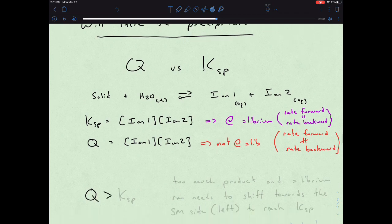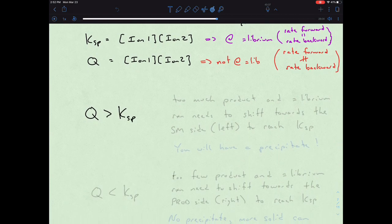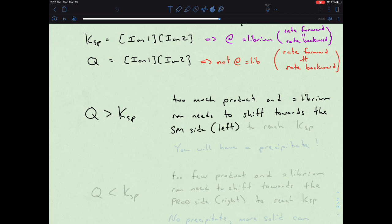So if Q is greater than Ksp, that means that we have too much product. An equilibrium reaction needs to shift towards the starting material side or left to reach equilibrium or to reach Ksp. So in this particular case, you will have a precipitate.